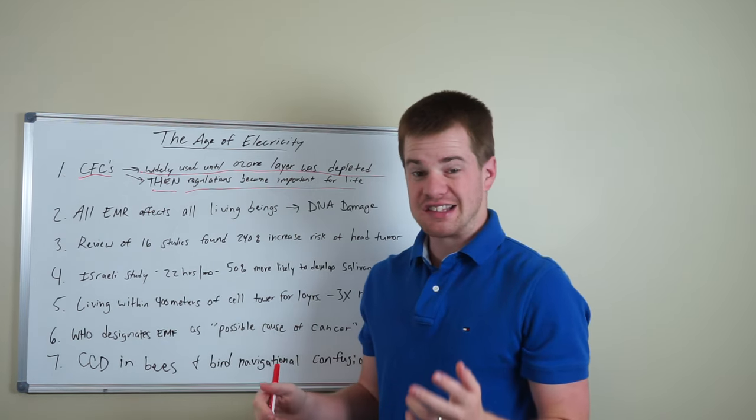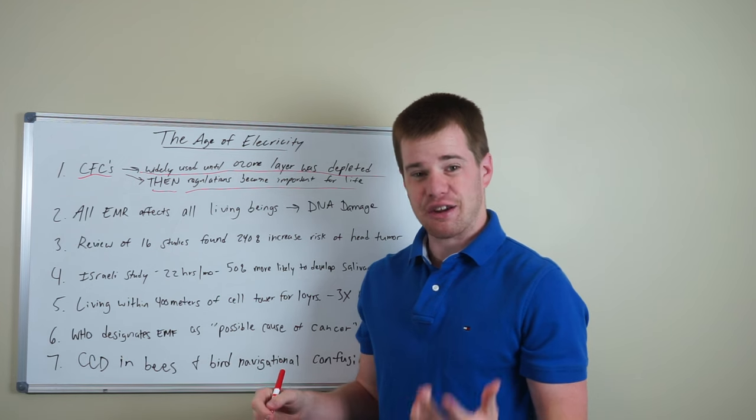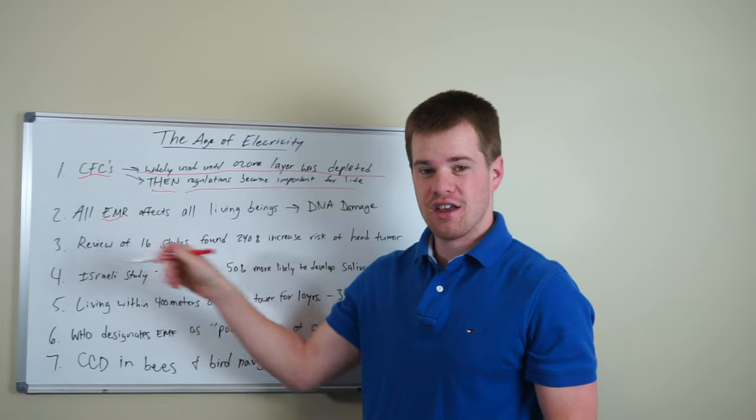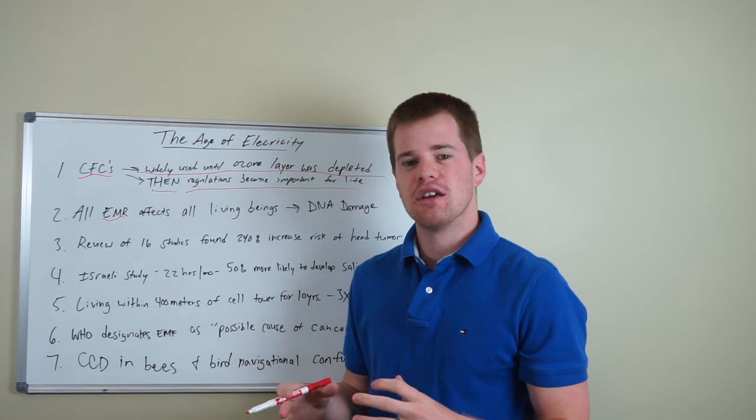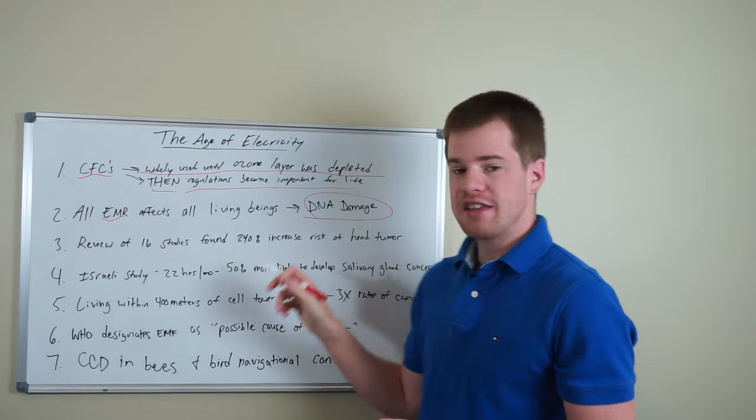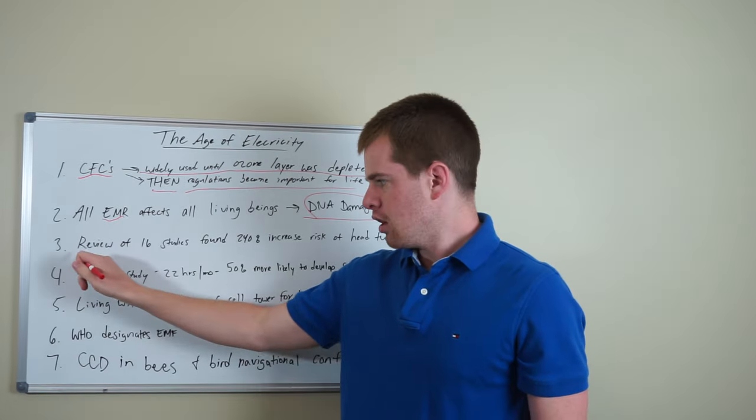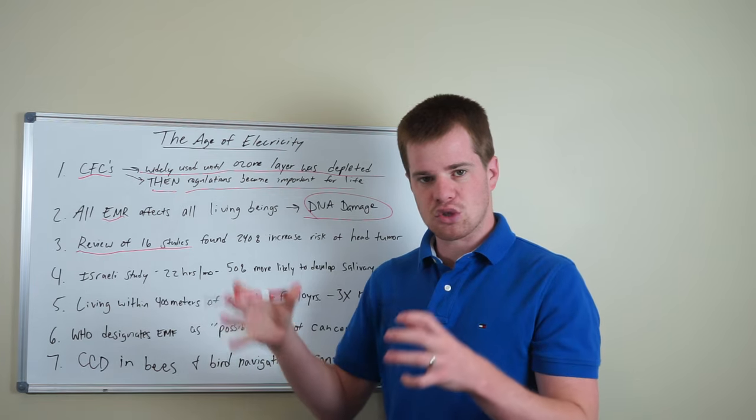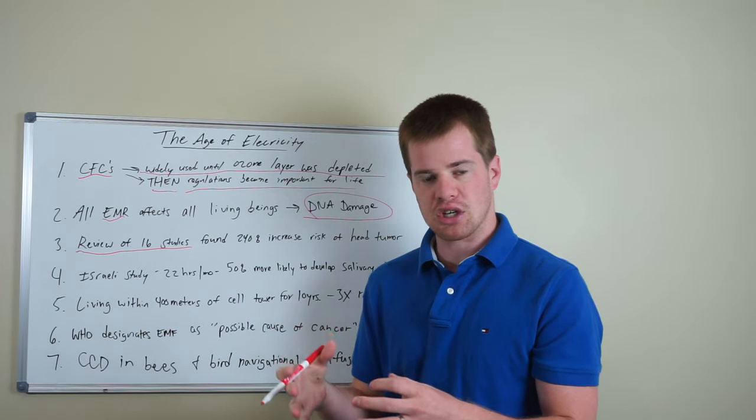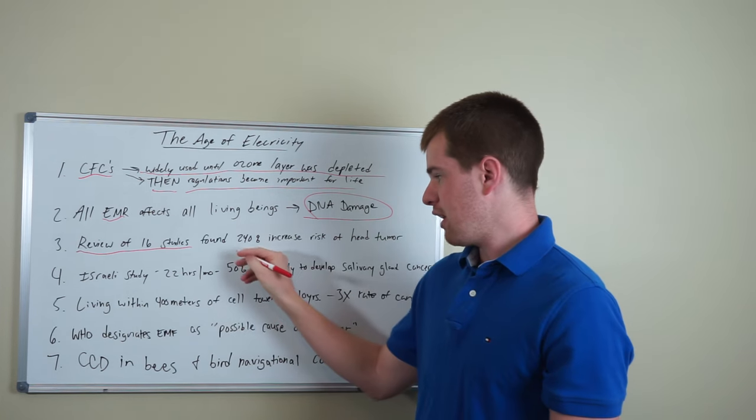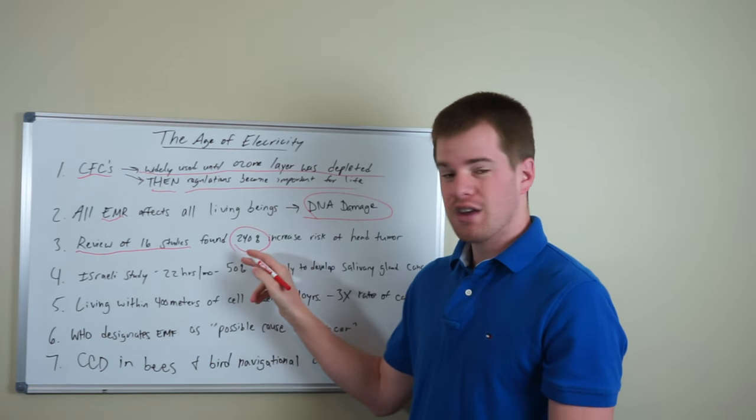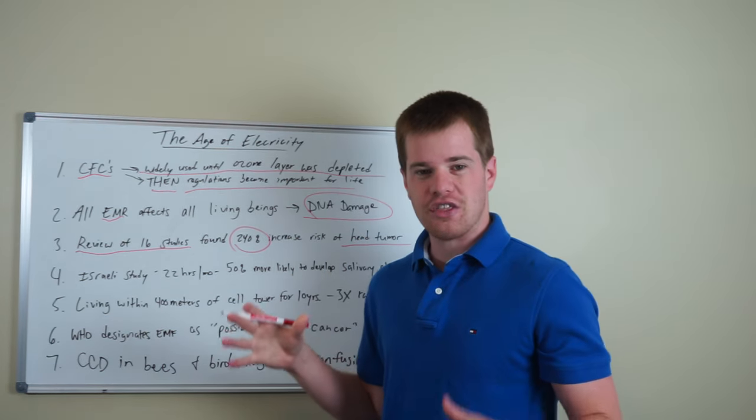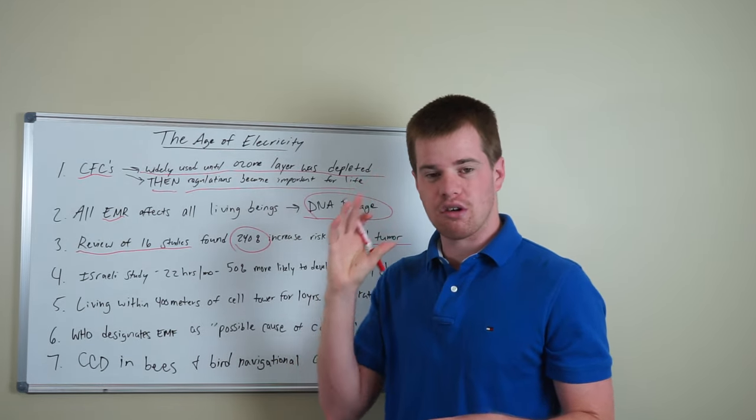The next thing you have to understand is that all electromagnetic frequencies and electromagnetic radiation affects all life. And there's research that shows this. It's DNA damage that we're talking about. There was a review of 16 different studies that had various sorts of data about electromagnetic radiation and cell phone use, and it found that there was a 240% increase in the risk of a head tumor on the side of the head that the cell phone was most frequently used on.